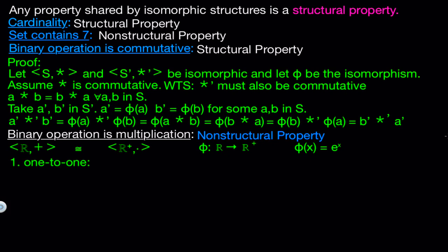This is a one-to-one function. Because if we say e to the x equals e to the y, then by taking the natural log of both sides, we get that ln of e to the x equals ln of e to the y, and then this just implies that x equals y, so it is one-to-one. This is also onto.